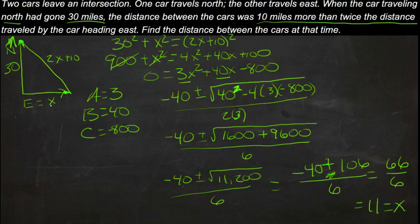So that tells us here that this distance was 11. 11 miles is the east distance. And then the overall distance would be 2 times 11, that's 22 plus 10, or 32 miles.